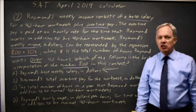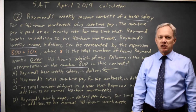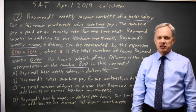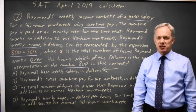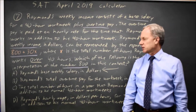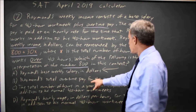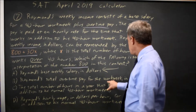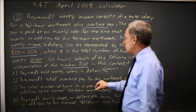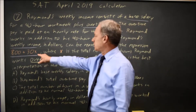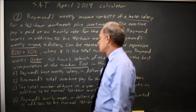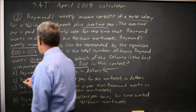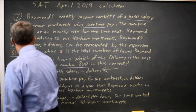It's a good idea to always read all options because sometimes that will call your attention to something you may have missed in the paragraph. Choice B — total overtime paid for the work week in dollars — would be 30 times X, so that is not the 800.